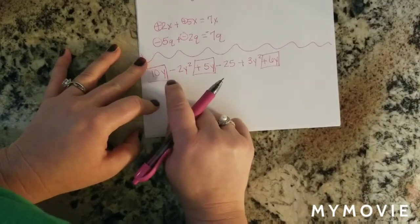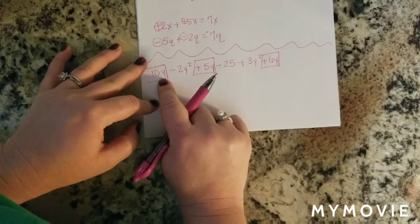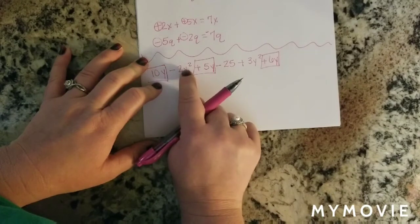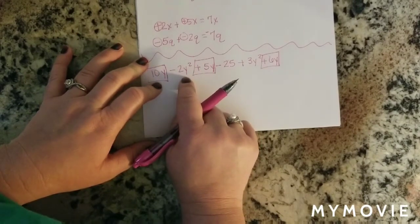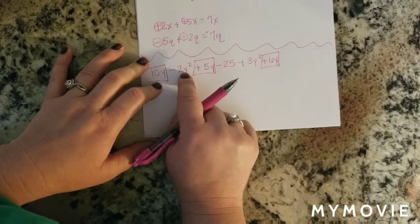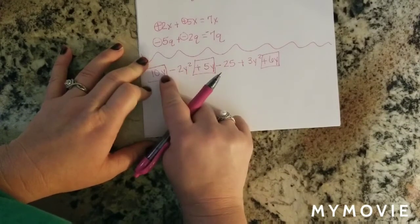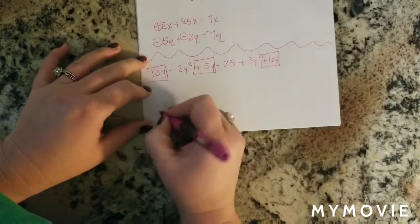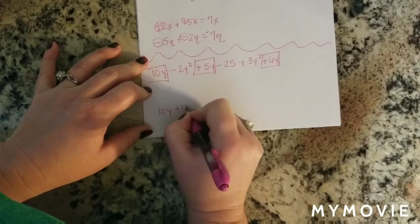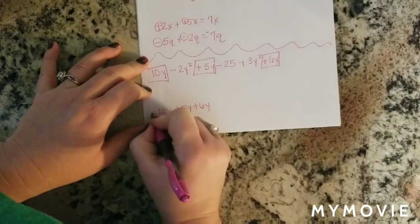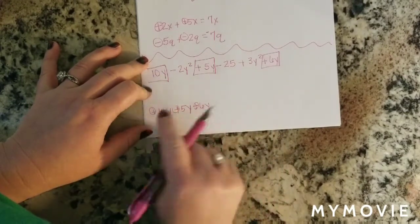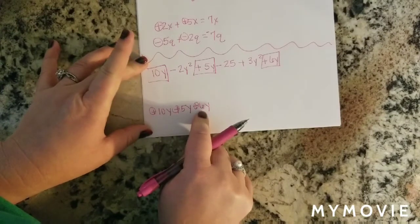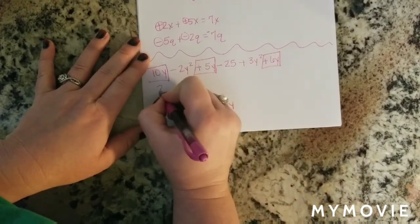If y equals 2, then 10 times 2 is 20. But y squared means y times itself — 2 times 2 is 4, not 2. So always remember, terms must be exactly the same to combine. Skipping down, we have 10y plus 5y plus 6y. All signs are positive, so we add: 10y plus 5y is 15y, and 15y plus 6y is 21y.